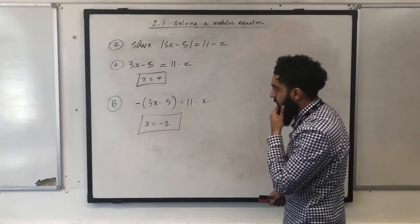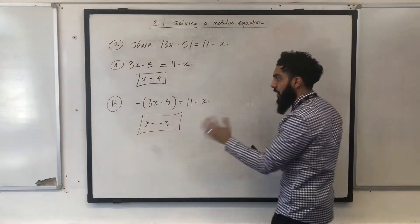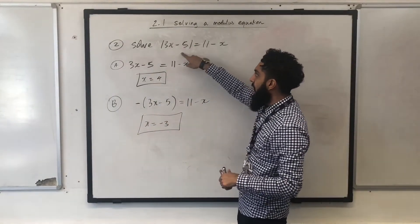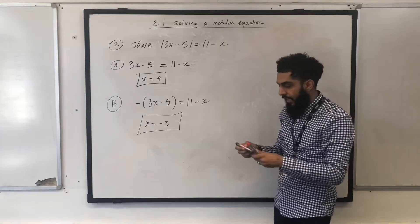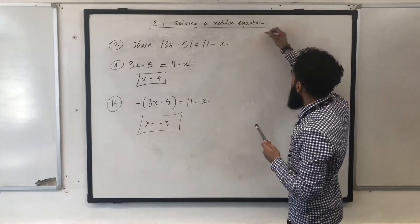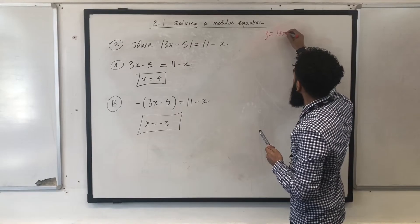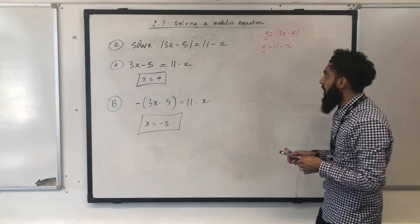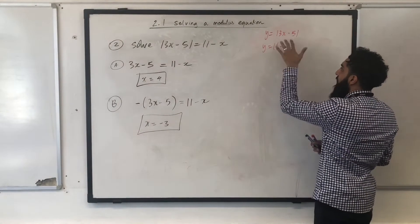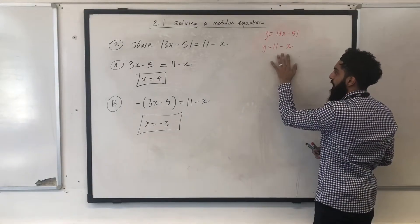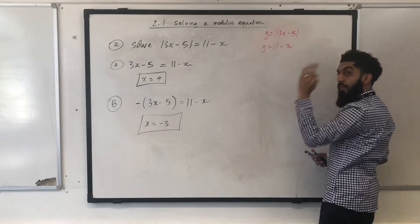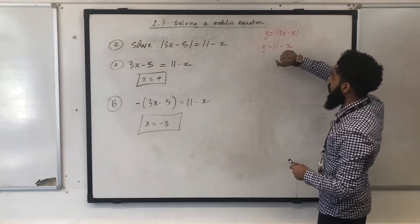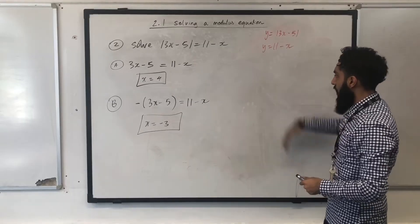We've got two solutions over here. If we were to look at it graphically, we are trying to conclude that there are two intersections between y equal modulus of 3x minus 5 and y equal 11 minus x. We can actually check this by sketching the graphs on the same coordinate grid. Before we sketch it, we know that the first graph will be steeper than the second graph. Because the gradient of the first graph is 3 and the gradient of the second graph is minus 1. So, I'm going to quickly sketch these two graphs on the same coordinate grid.